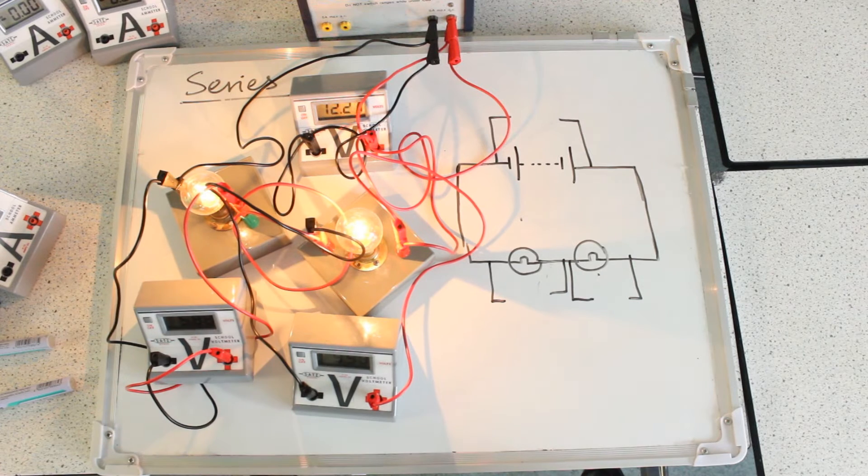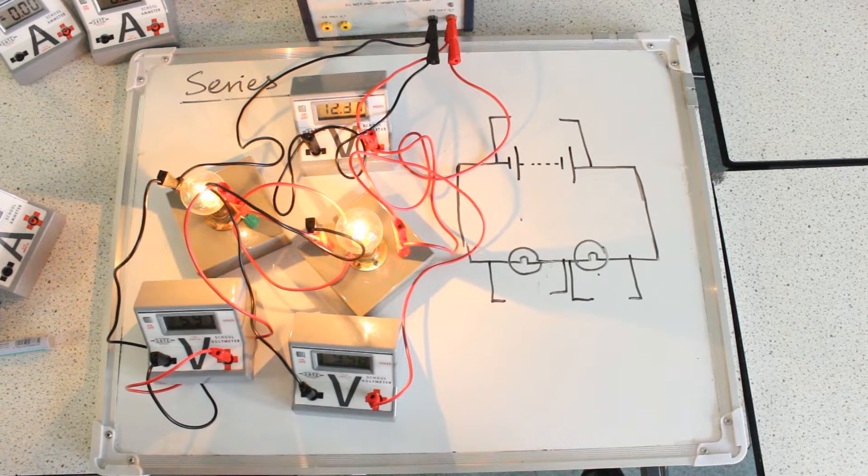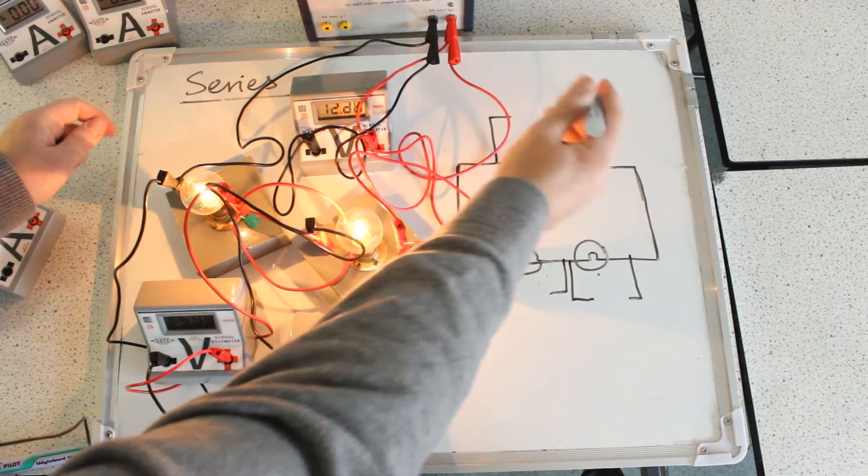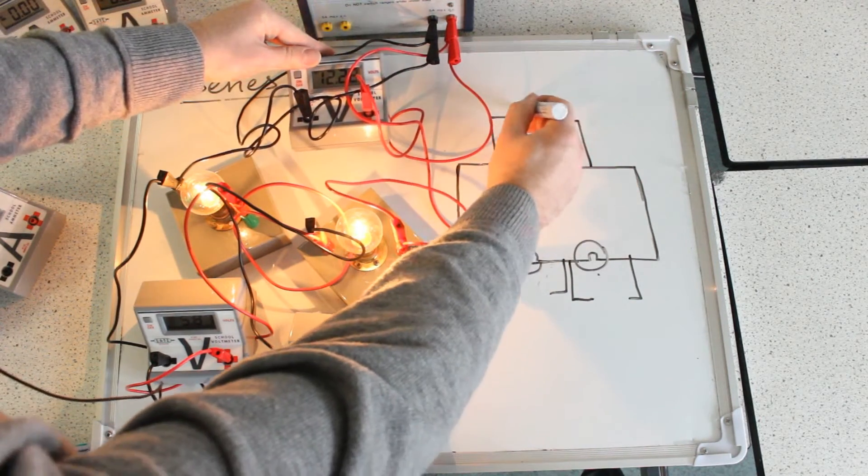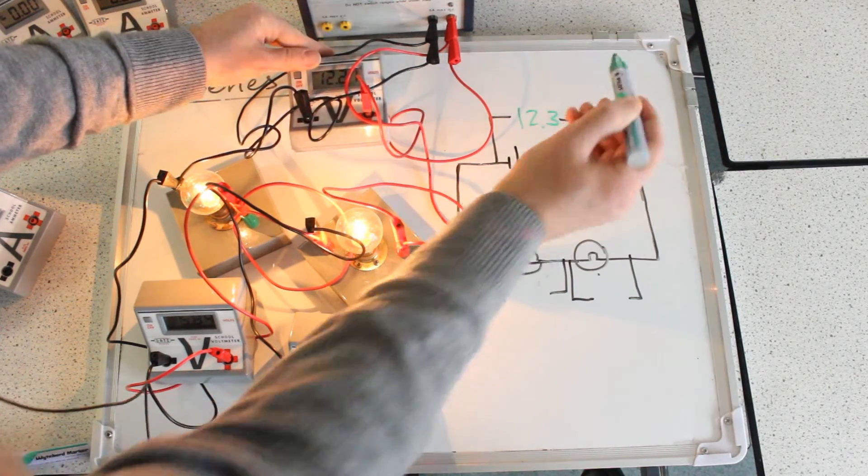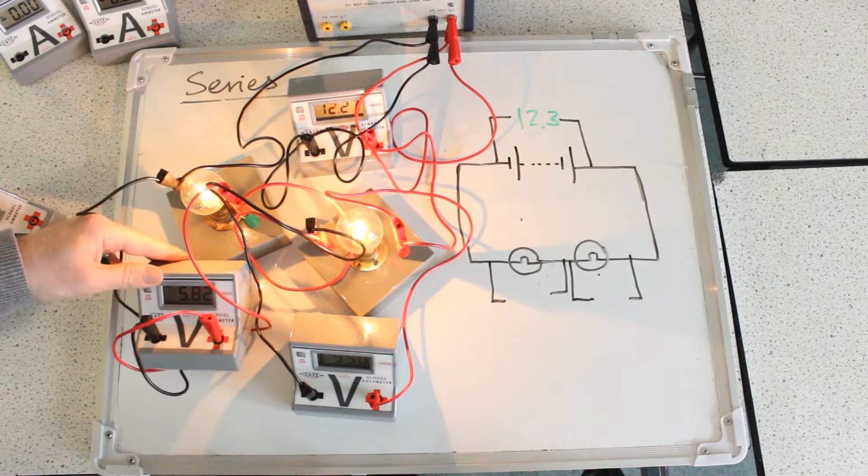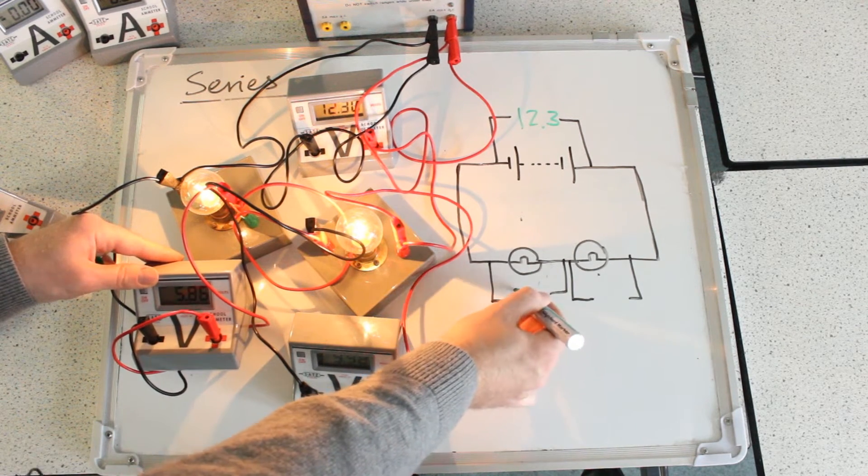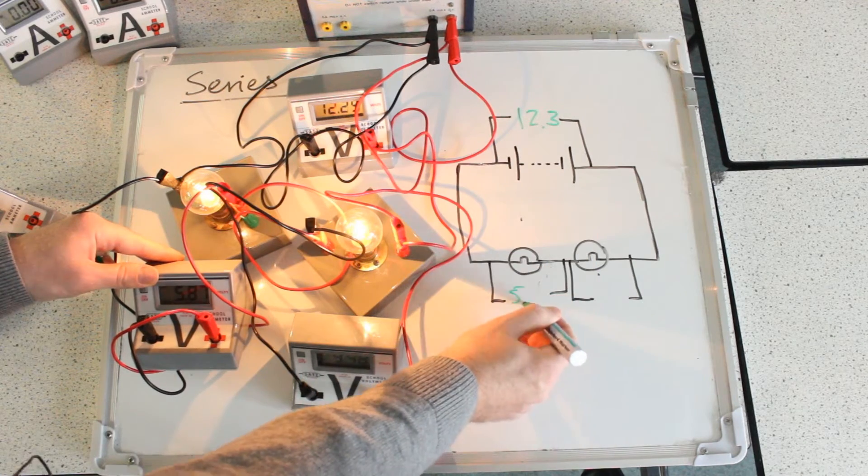So this voltage here, this is the supplied voltage. You've got to think about that as the voltage being supplied to the circuit. And these two voltages down here, these are using up that energy that the supply is giving to the circuit.